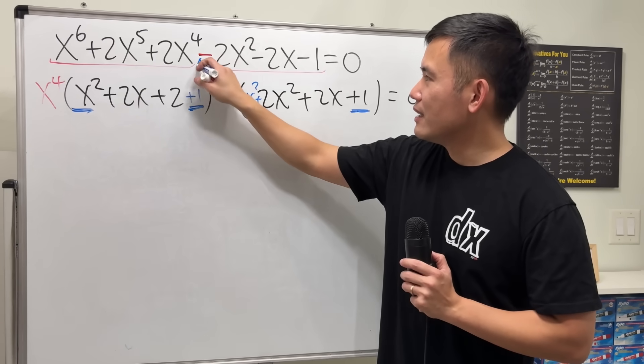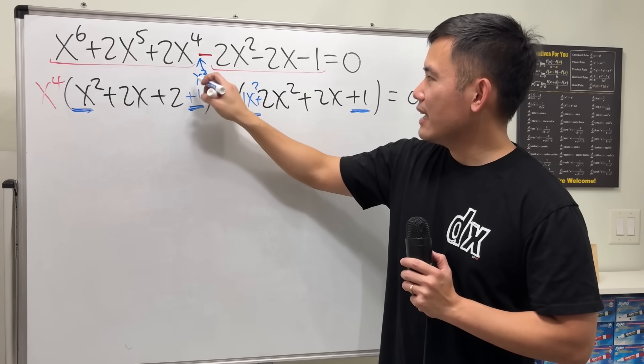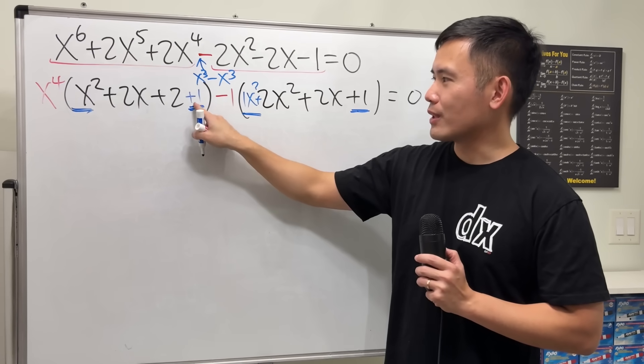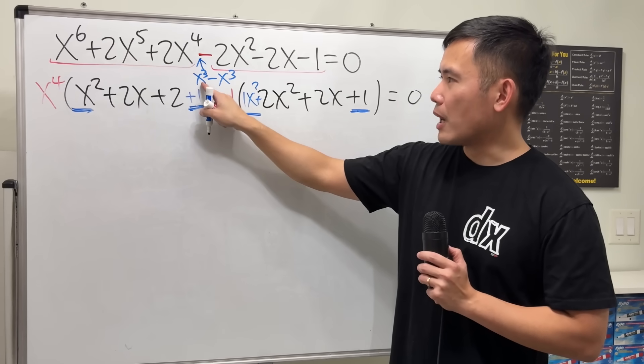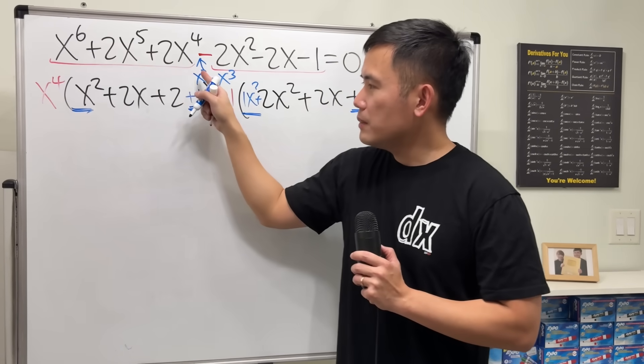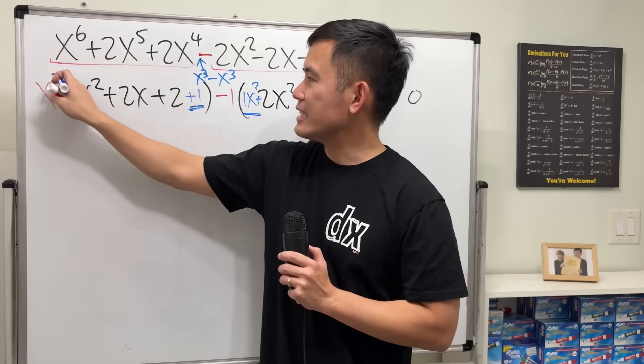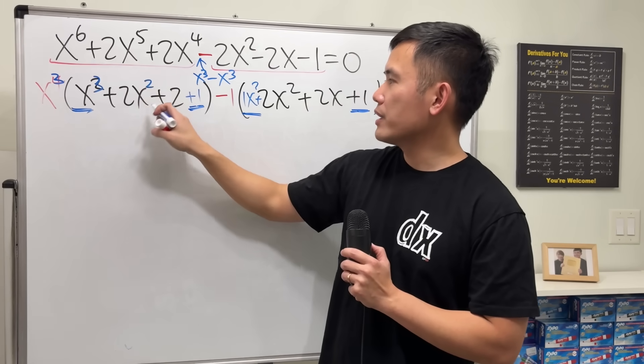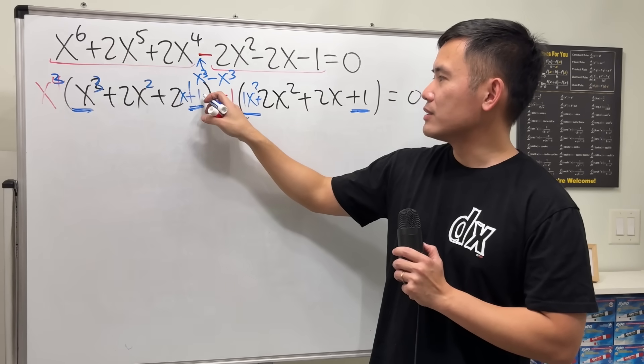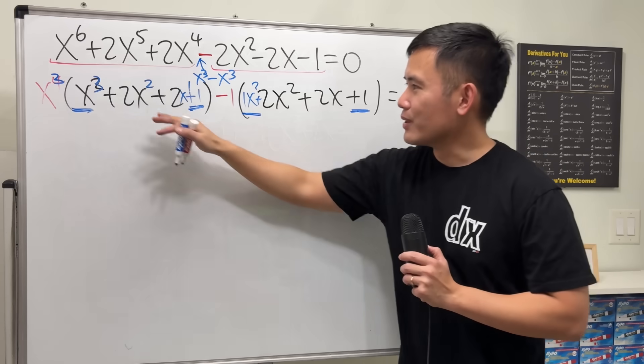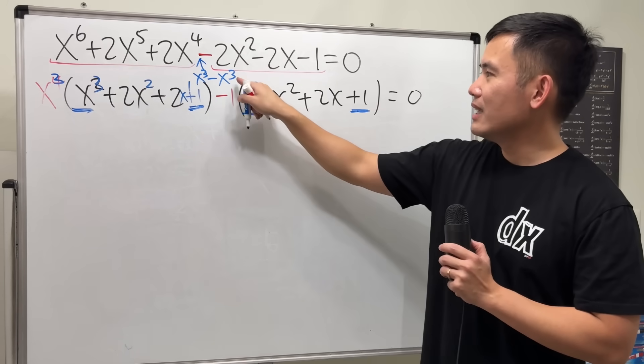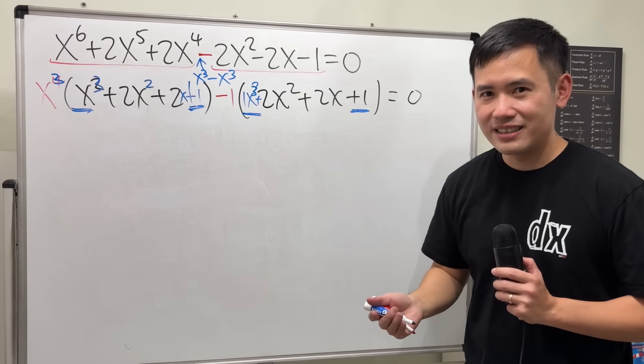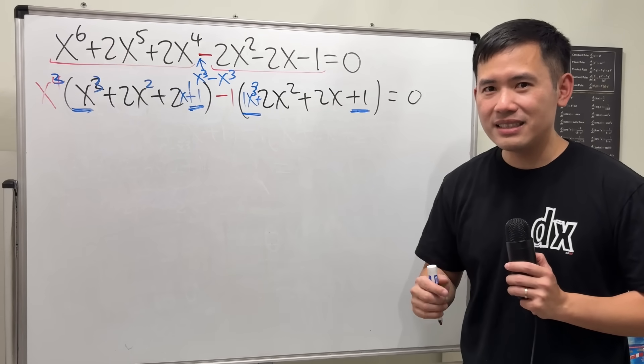Right here, why don't we just add x^3 and minus x^3? That will contribute to this. And because once we have x^3, the first four terms, we can only factor out x^3, and then we get x^3, and then squared here, x to the 1st, and this right here has no x. So this, and that, and right here, that will also be x^3. That's the thought process. Now, let me write down everything nicely for you guys.